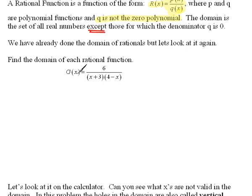Here we have a function that is 6 over X plus 3 times 4 minus X. This is a rational function because we have a polynomial of 6 and then a polynomial of 2 binomials in the denominator.